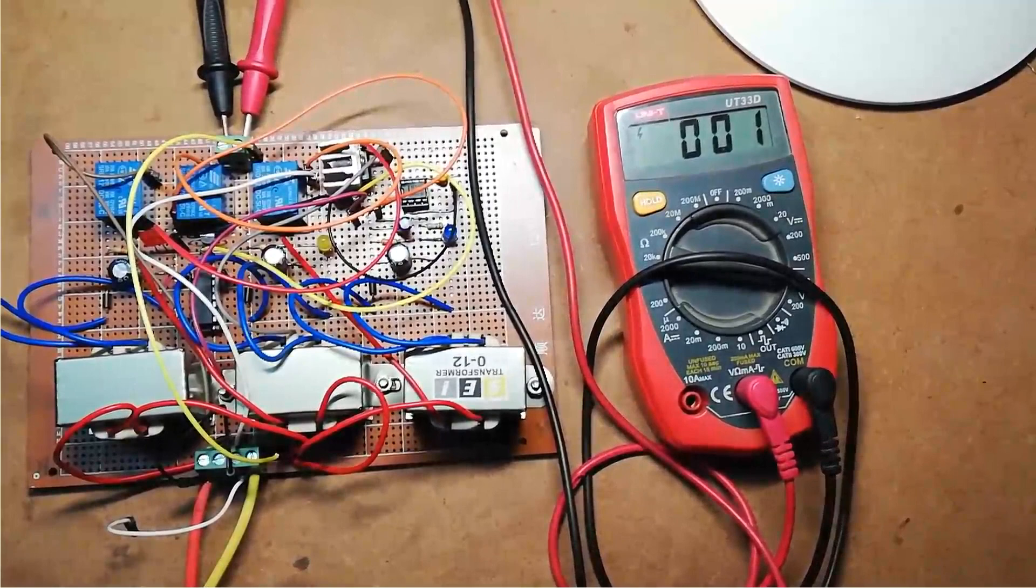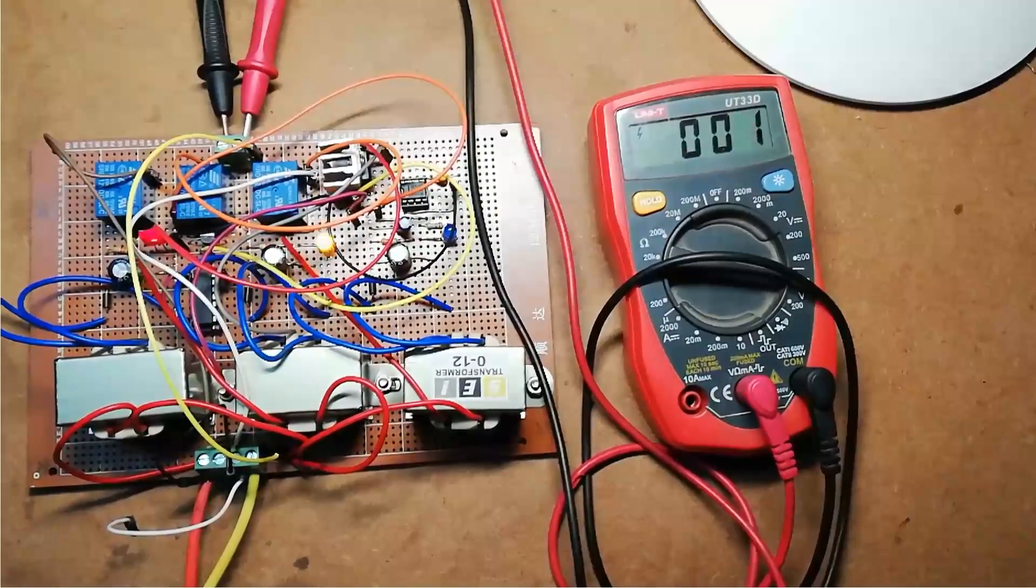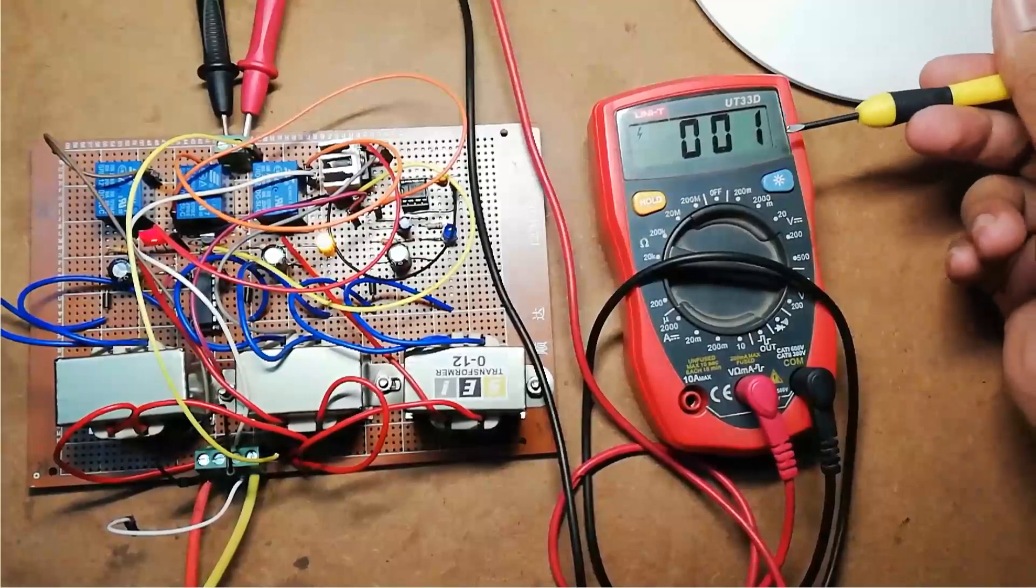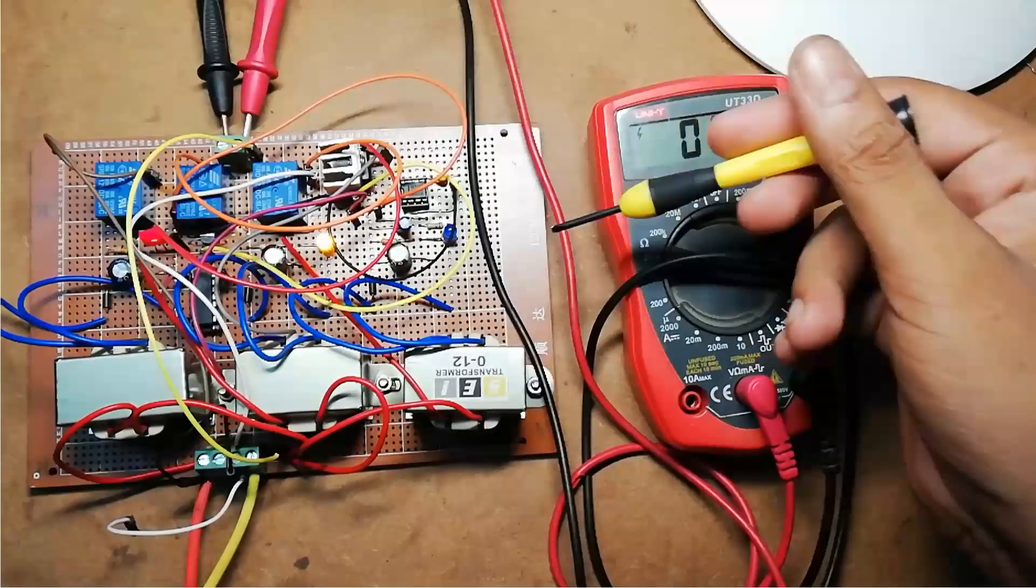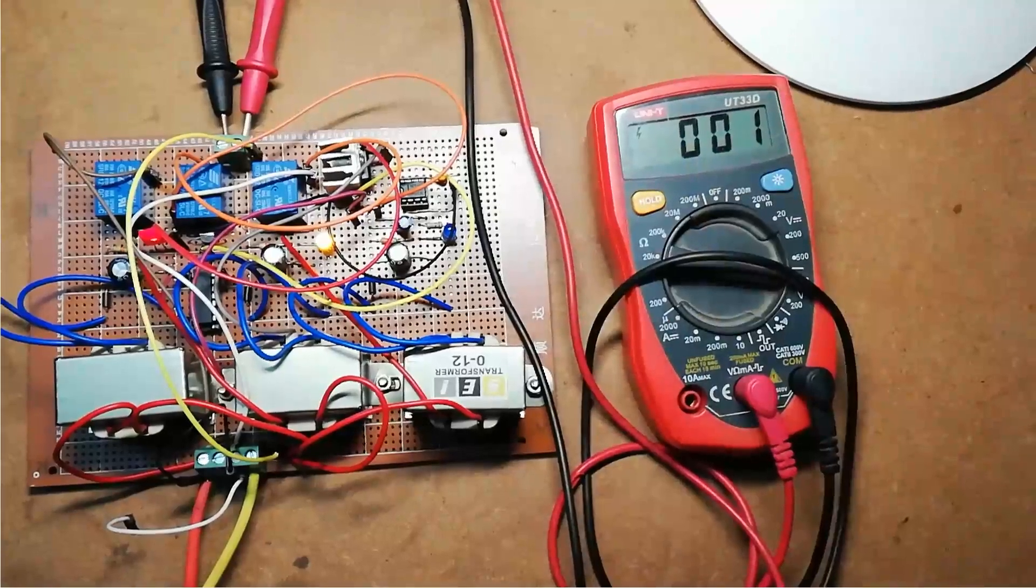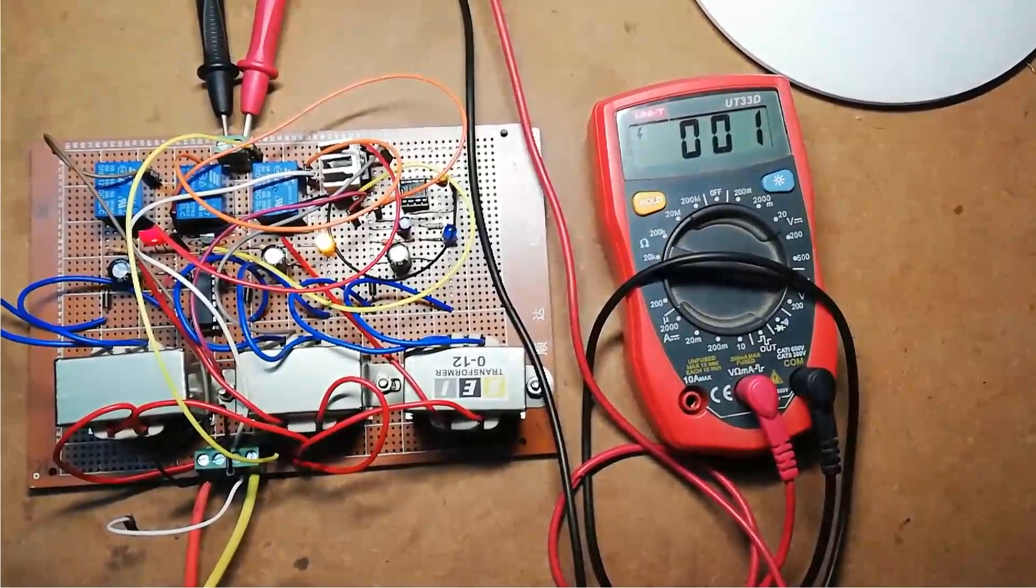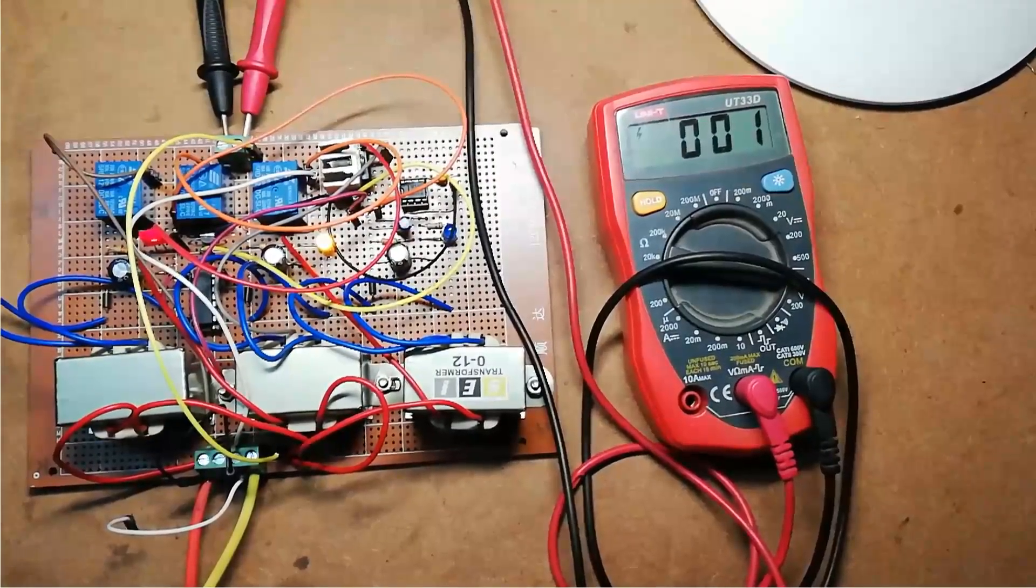Now let's see the output if any of the phase is missing. Let's say B phase is missing. If you connect the power supply, no voltage is appear across this multimeter because one phase, i.e. B phase is missing. In this way, this circuit protects the 3-phase load by stopping it automatically under such condition.